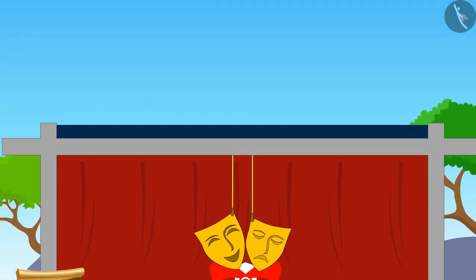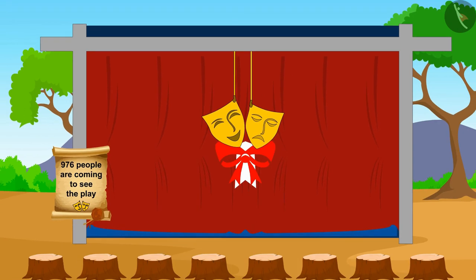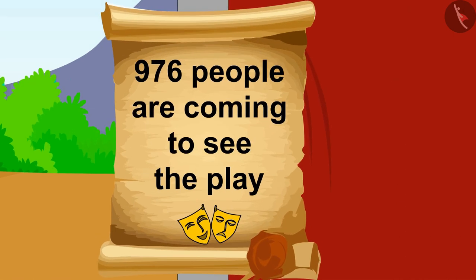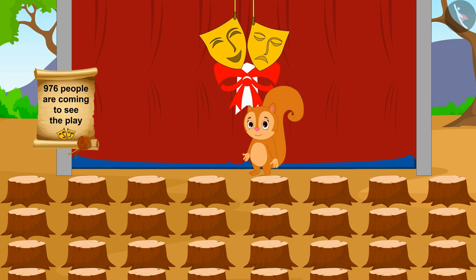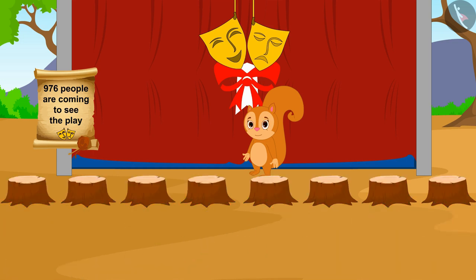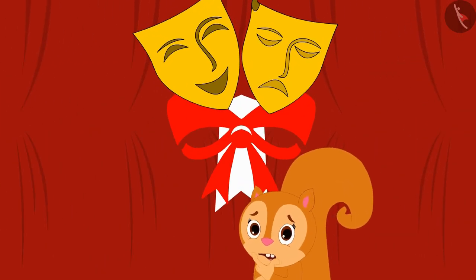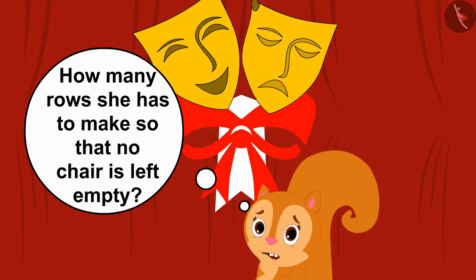A stage play is going to be held in Champapur's fair. 976 people are coming to see the play. For the audience coming to the play, Chanda has to set up chairs with eight chairs in each row. She is thinking how many rows she has to make so that no chair is left empty.